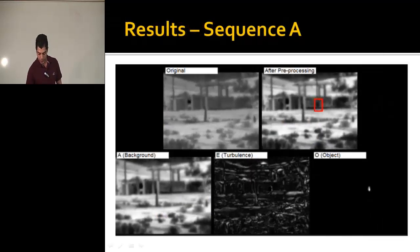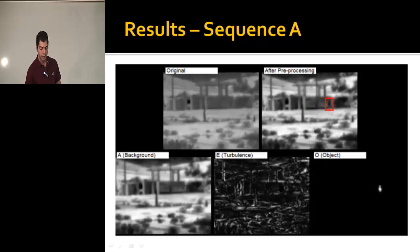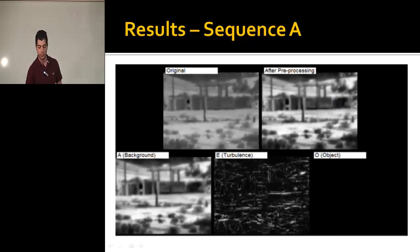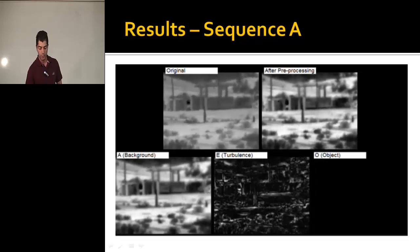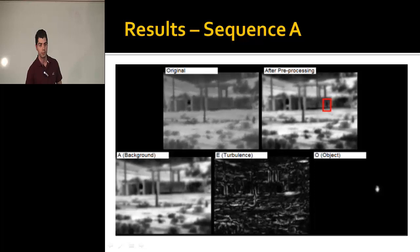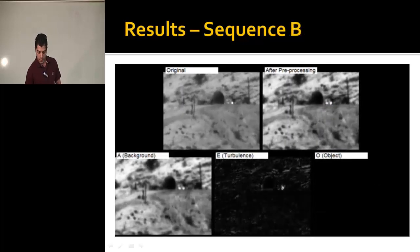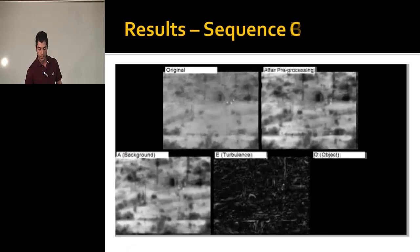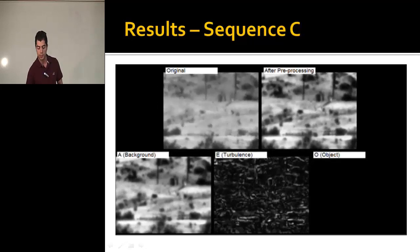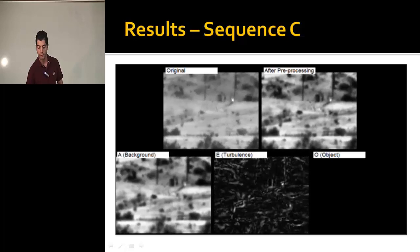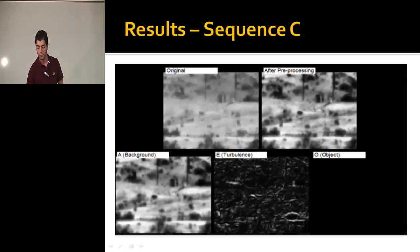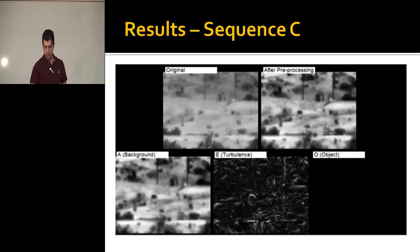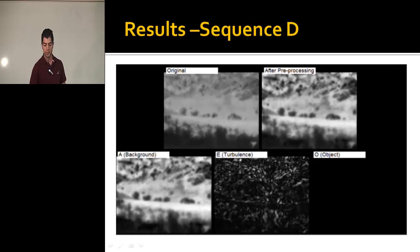This is one result on sequence A: we decompose the sequence and find the object, turbulence, and background. This shows the original sequence before preprocessing and after preprocessing, which is the input to the decomposition. For sequence P, we obtain the object, turbulence, and background components, and the object is detected successfully.